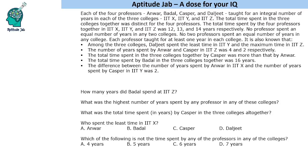Hello everyone, welcome to Aptitude Jab. This set says that there are four professors — A, B, C, D — they taught for an integral number of years in three colleges: X, Y, and Z. The total time spent in the three colleges together was distinct for all four professors. The total time spent by the four professors together in IIT-X, IIT-Y, and IIT-Z was 12, 13, and 14 years respectively. No professor spent an equal number of years in any two colleges, and no two professors spent an equal number of years in any college. Each professor taught for at least one year in each college, and some further information is also given.